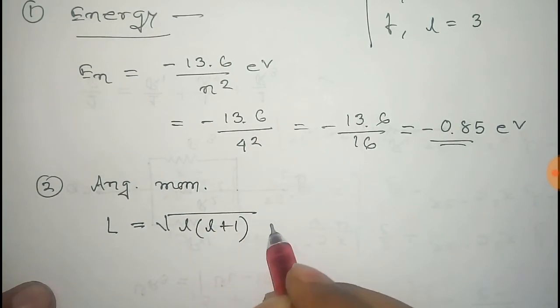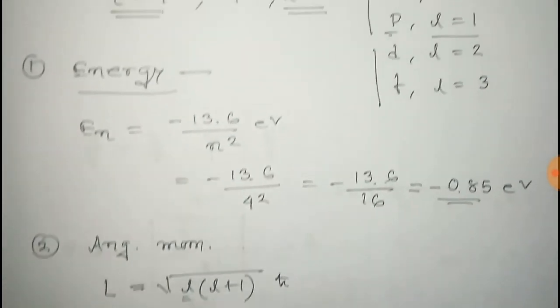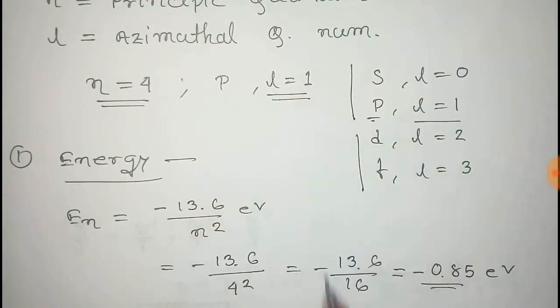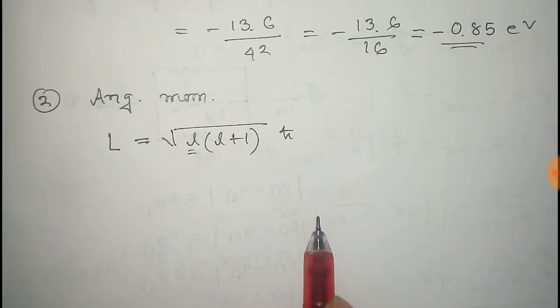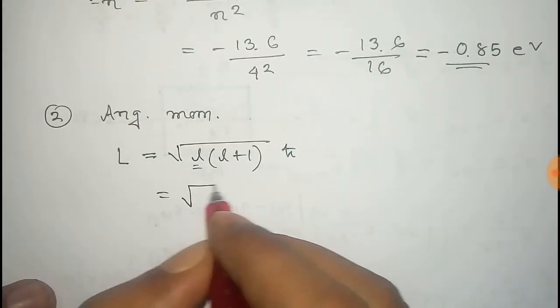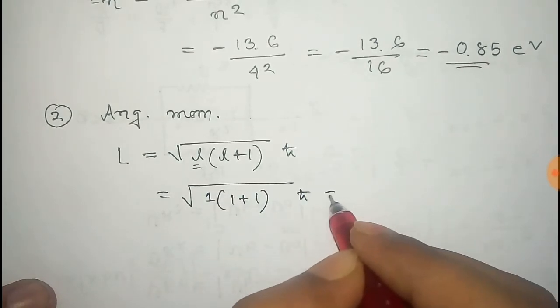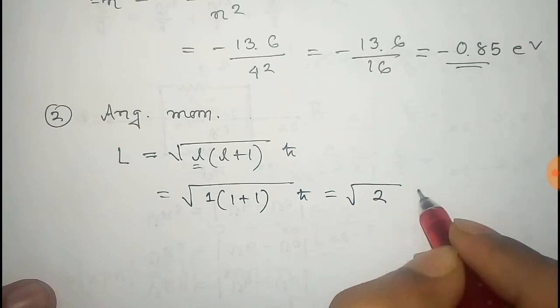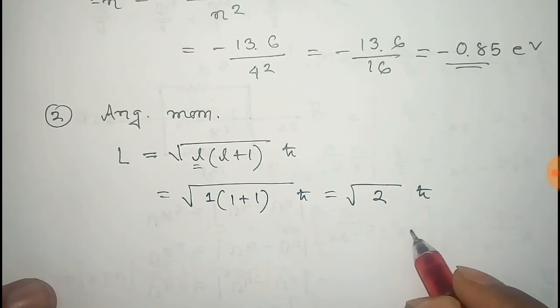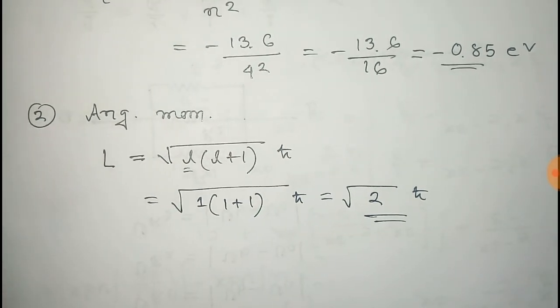The value of l that we have is 1, so putting this there, the angular momentum is square root of 1 times 2, times h-bar, which equals square root of 2 h-bar. Thus we get the angular momentum of the electron in the 4p state of hydrogen atom.